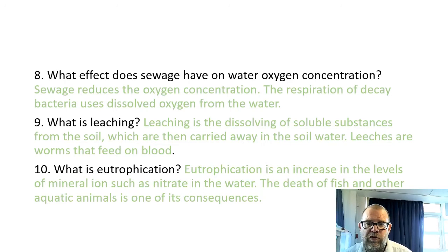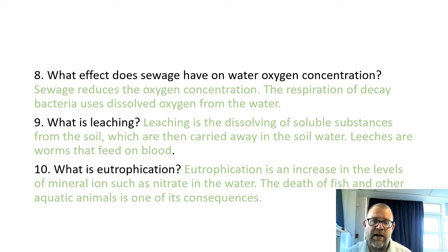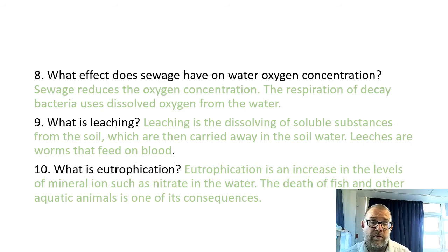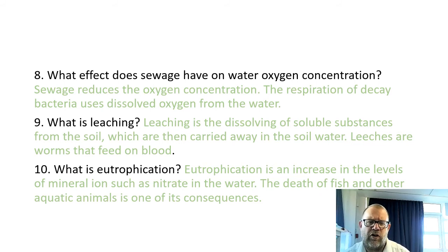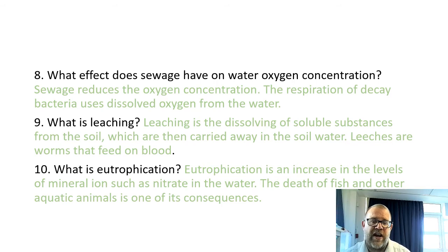Sewage reduces the oxygen concentration in water because the respiration of decaying bacteria uses dissolved oxygen. Leaching is the dissolving of soluble substances from the soil, which are then carried away in soil water — note that leeches are worms that feed on blood; we're talking about leaching. Eutrophication increases levels of mineral ions such as nitrates in the water, eventually causing the death of fish and aquatic animals within that waterway.